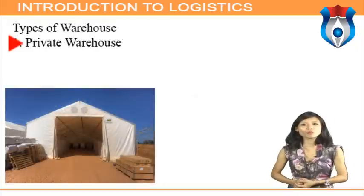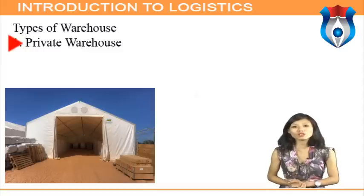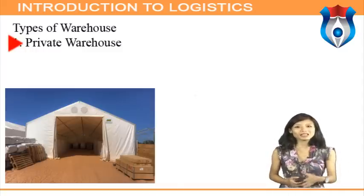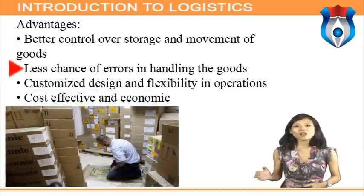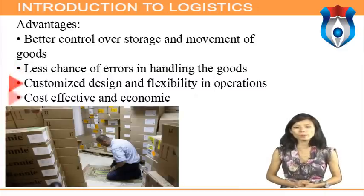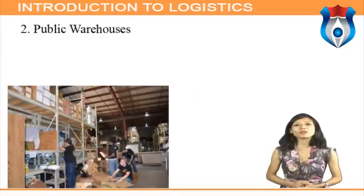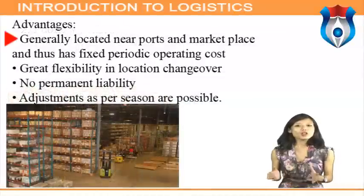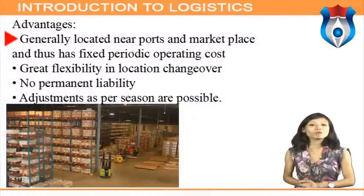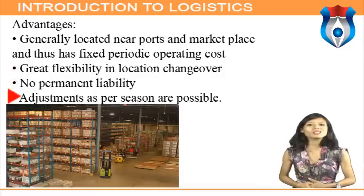Types of warehouses: Private warehouses are owned by the company for exclusive use storing goods for a specific period. Advantages include better control over storage and movement, less chance of handling errors, customized design and flexibility, and cost effectiveness. Public warehouses are hired from other agencies for storing goods for a specific period by paying rent — for example, Central Warehousing Corporation (CWC). Advantages include being generally located near ports and marketplaces, fixed periodic operating costs, great flexibility, location changeover, no permanent liability, and seasonal adjustment.